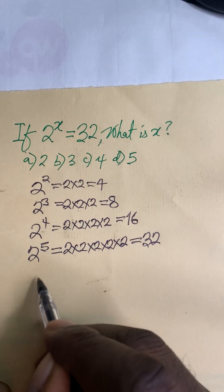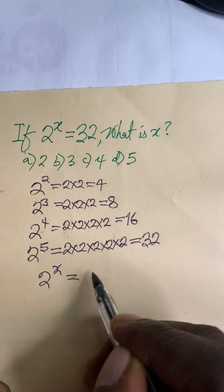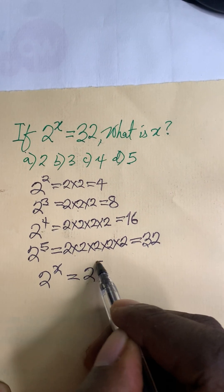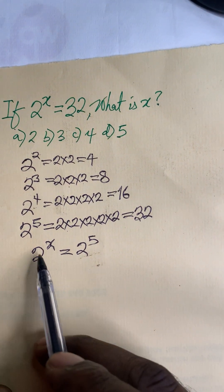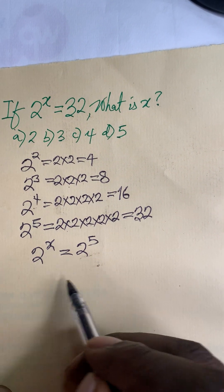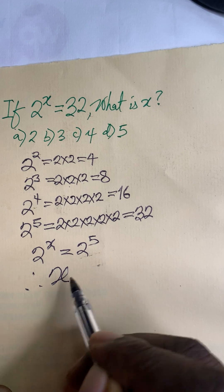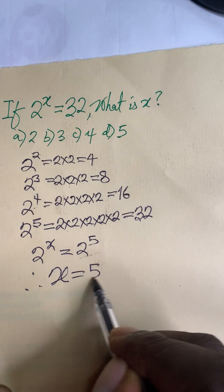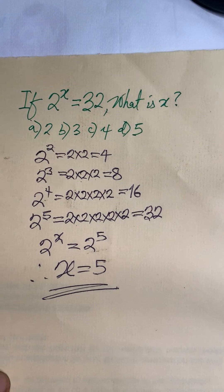So 32 can be replaced with 2 to the power of 5. Therefore, 2 to the power of x equals 2 to the power of 5. When the bases are the same, we equate the powers — so therefore x equals 5.